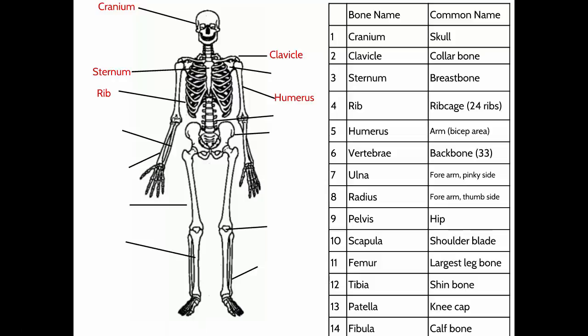The bones that make up your spine are called vertebrae, and we have 33 vertebrae in our spines. They're a bunch of smaller bones stacked one on top of each other with a little disc of cartilage in between. Those bumps you can feel in your spine — each one is a vertebra.